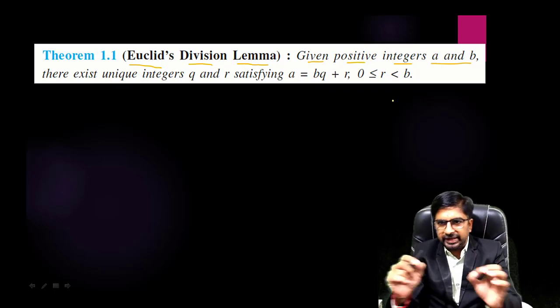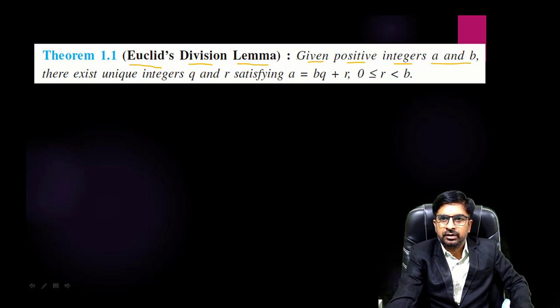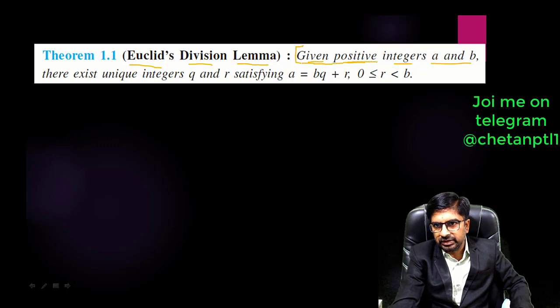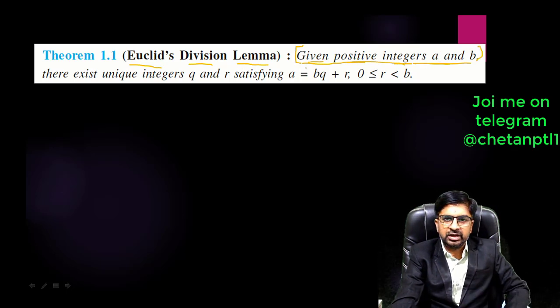You are not going to understand anything out of this statement, but let me explain this properly. Given positive integers a and b means they have given you two positive integers and the name of those two integers are a and b.